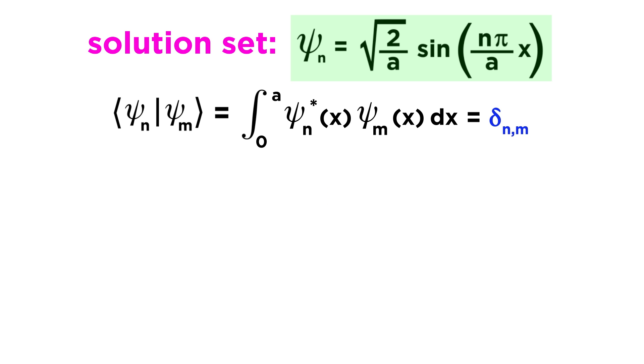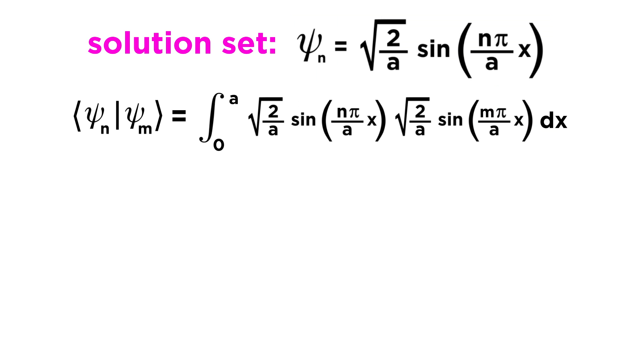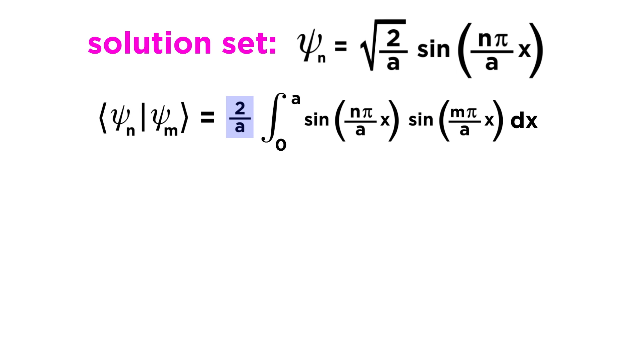Recalling the definition of the inner product and the boundaries of our system, this must equal the integral from 0 to a of psi sub n star of x times psi sub m of x dx, which again equals the Kronecker delta. As we already know, this term equals 0 when n and m are not equal, and equals 1 when n and m are equal. We solved this integral for the case where n equals m when we normalized the wavefunction in the previous tutorial and saw that it did indeed equal 1. Now we must solve for the case where n and m are not equal, meaning that we are looking at two different wavefunctions from the solution set. So let's plug in our expression for psi so that we can find out if any two arbitrary wavefunctions are indeed orthogonal.